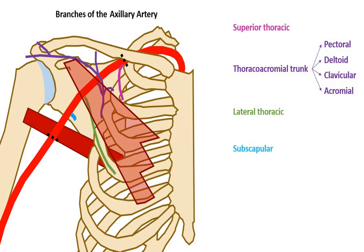Here is the largest branch, the subscapular artery. It divides to give the circumflex scapular artery, which will pass inferiorly around the lateral border of the scapula, and the thoracodorsal artery, which runs deep to latissimus dorsi.